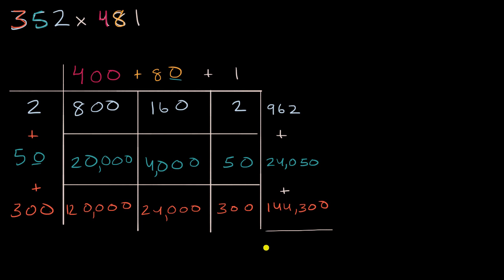And I'm going to hold off doing that for a second as we see the other way of multiplying these numbers. So the other way of doing it, we could have 481, and this is sometimes called the standard algorithm, 481 times 352.